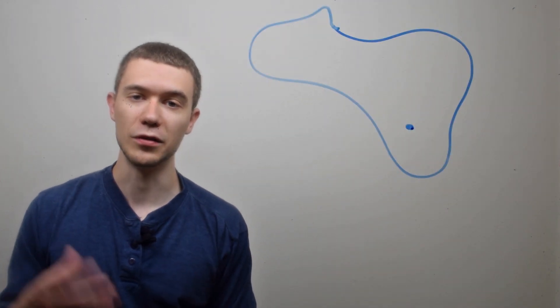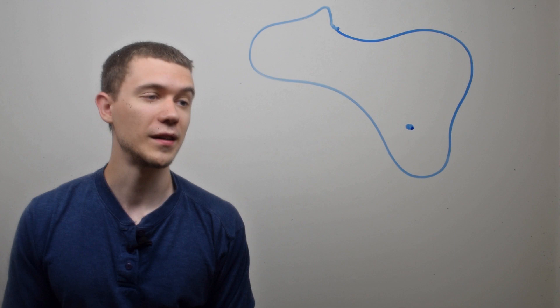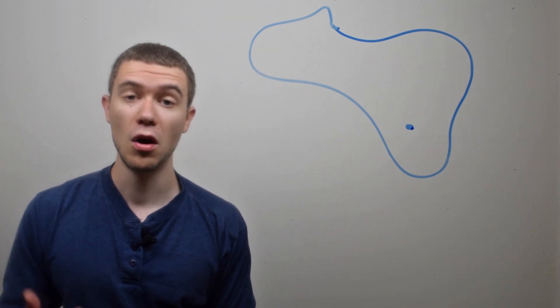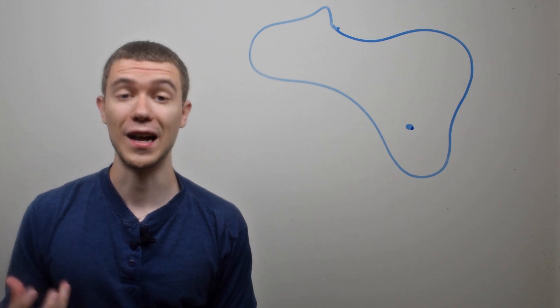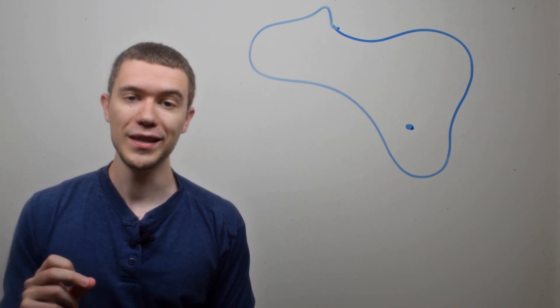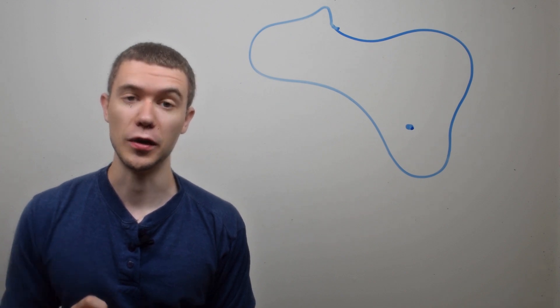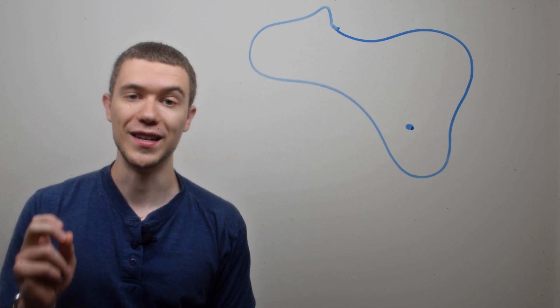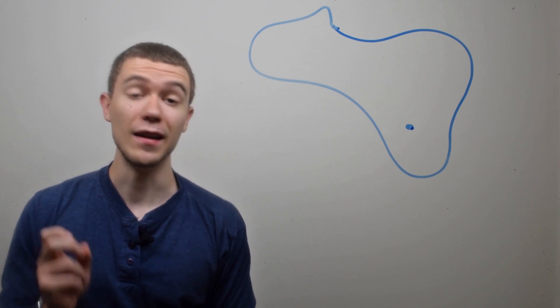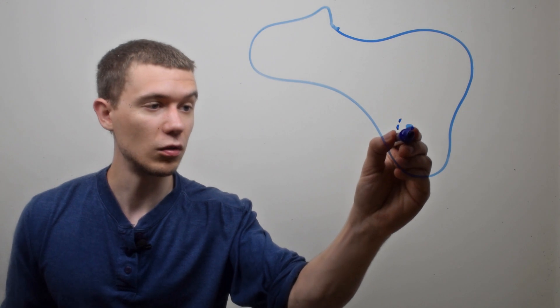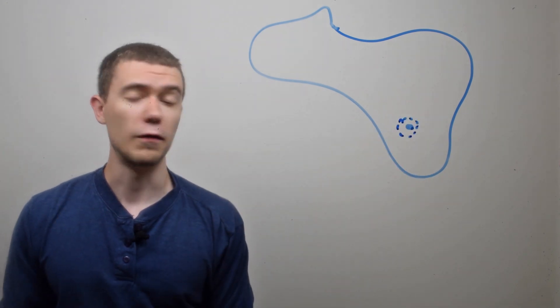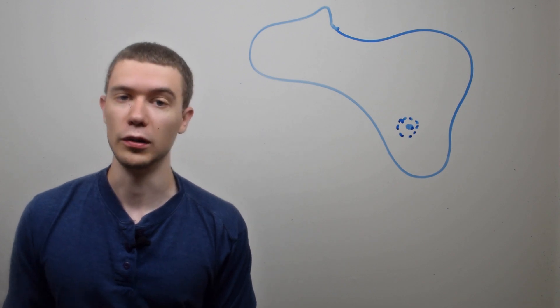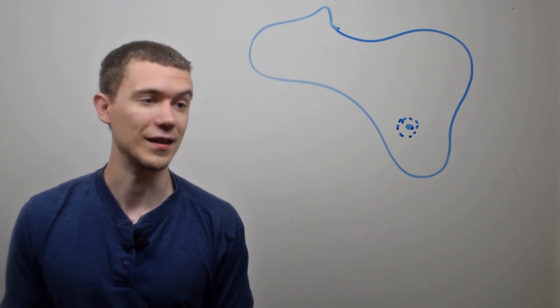Here I've drawn some set or some region with a point. One way we can classify points is whether they're an interior point, an exterior point, or on the boundary. A point is said to be an interior point if I can enclose it within a neighborhood entirely inside the set. In other words, if I can draw this circle without a boundary for some distance around that point and that neighborhood is entirely enclosed within this set. So this point is an interior point.